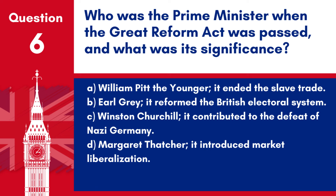Question 6. Who was the Prime Minister when the Great Reform Act was passed? a. William Pitt the Younger. b. Earl Grey. c. Winston Churchill. d. Margaret Thatcher. Answer: b. Earl Grey was the Prime Minister when the Great Reform Act was passed, significant for reforming the British electoral system and extending the vote to more men.